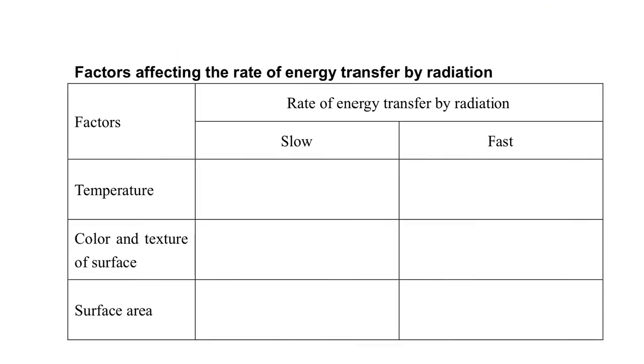Let's consider some factors related to the rate of energy transfer through radiation. When will the radiation transfer faster? Firstly, temperature. For objects with higher temperature, the radiation will be given out faster compared with ones with lower temperature.